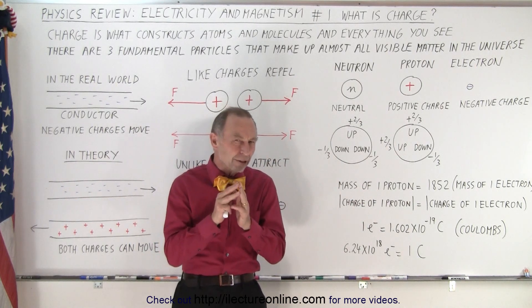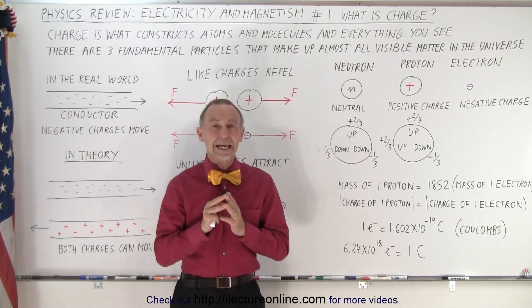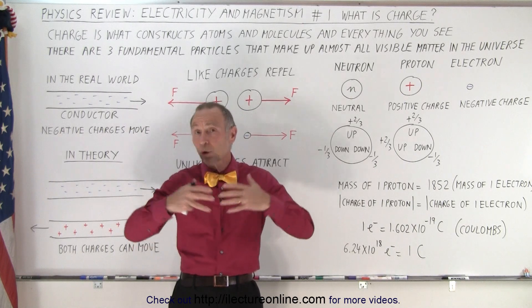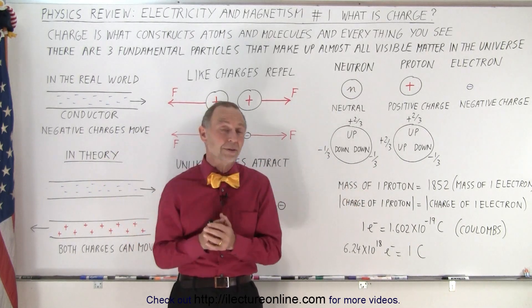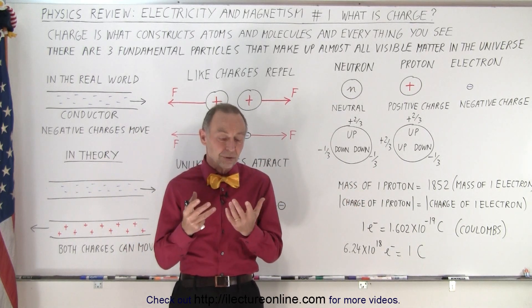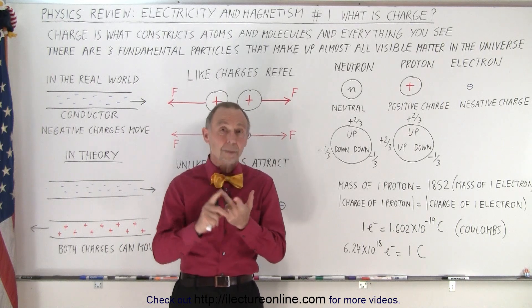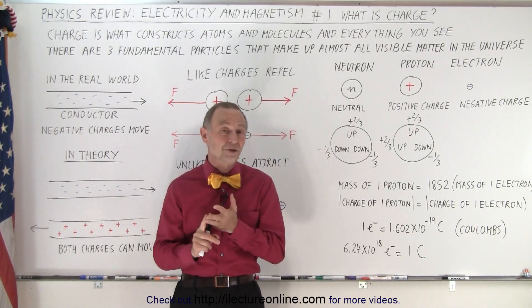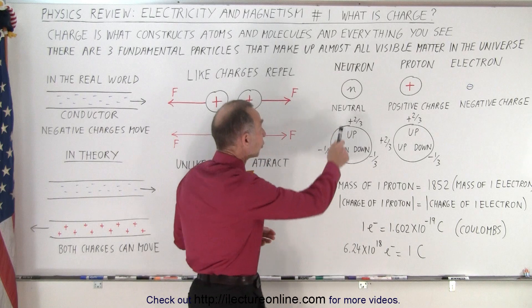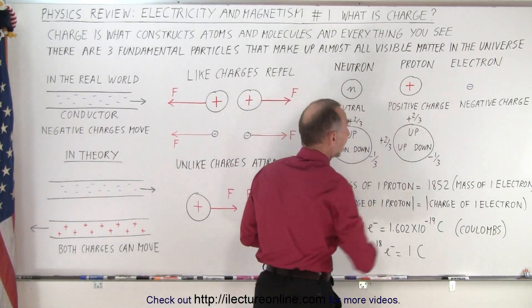There are three fundamental particles in nature that represent just about all of the visible matter that's around us. Those three particles either have no charge, a positive charge, or a negative charge. The three particles are the neutron, the proton, and the electron.